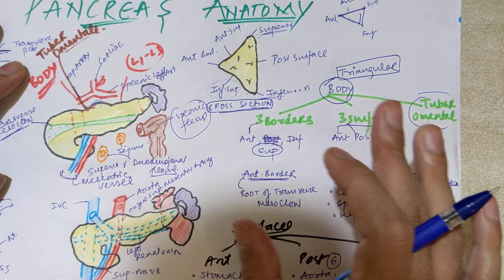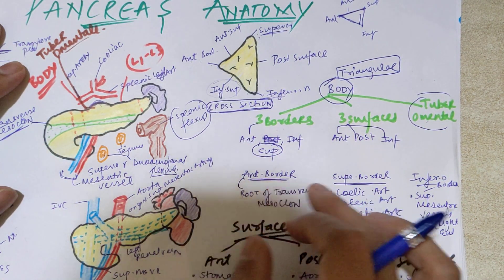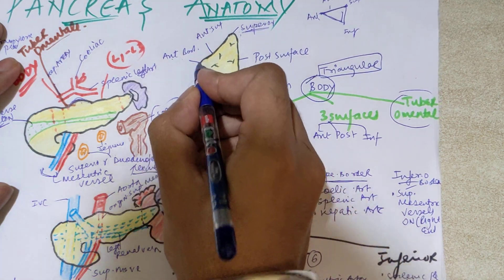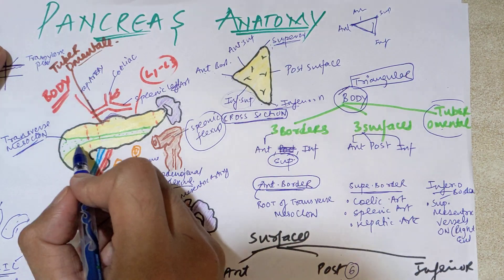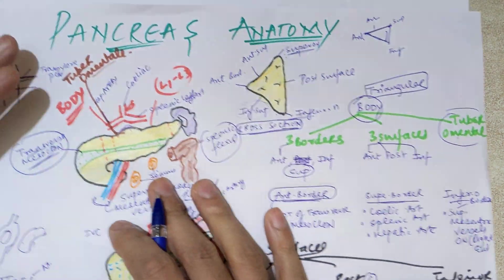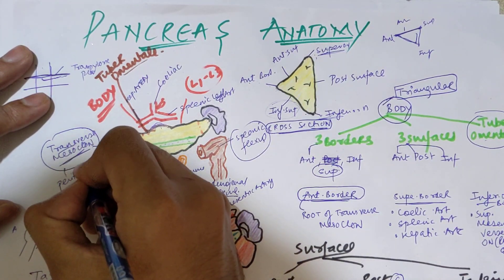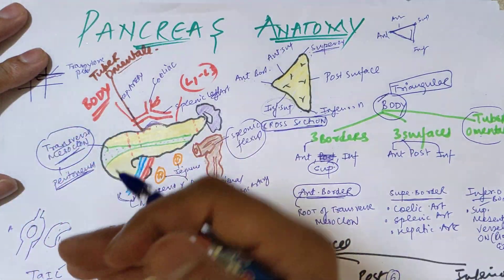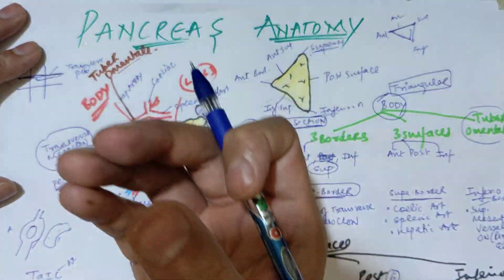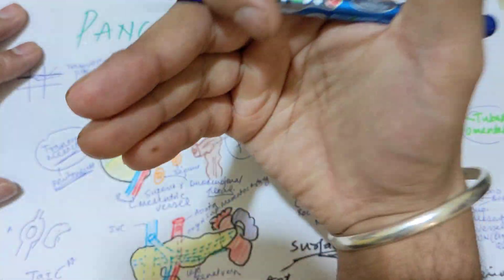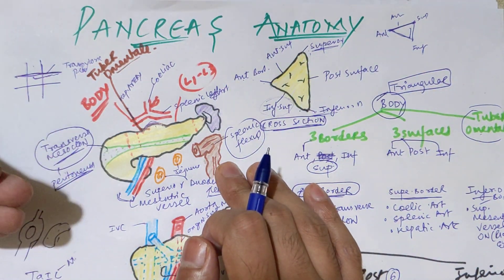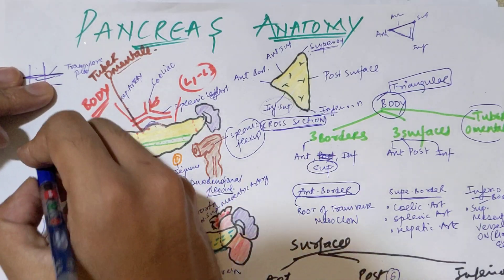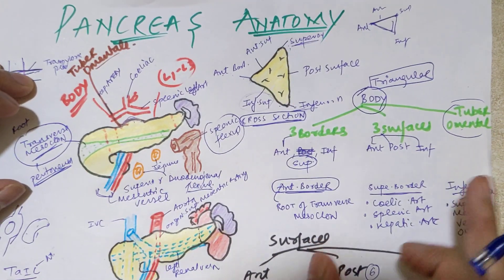For the anterior border relations: this border makes a place for the transverse mesocolon. The transverse mesocolon is part of the peritoneum — it is the posterior covering for the transverse colon, which holds the transverse colon from the posterior abdominal wall. So the root of the transverse mesocolon attaches on the anterior border of the body of the pancreas.